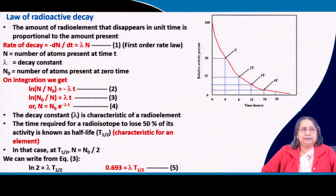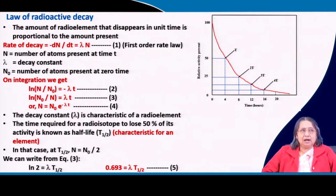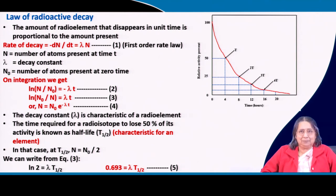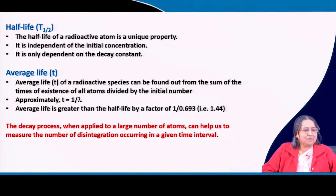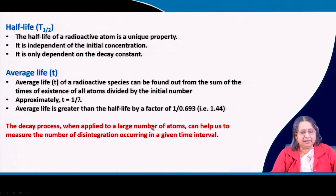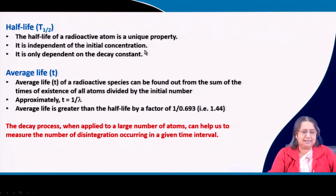For example, radioactive radium has a particular half-life; uranium-235 has a particular half-life; carbon-14 has its own particular half-life. Every radioactive element is characterized by its half-life — this is very important for radioactivity. The half-life of a radioactive atom is a unique property, independent of initial concentration, and dependent only on the decay constant.